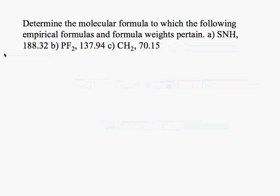The first one we have is sulfur, nitrogen, and hydrogen, and it has a molecular weight of 188.32. When we do this type of problem, the first thing that we want to be able to do is add up the molecular weights of sulfur, nitrogen, and hydrogen.